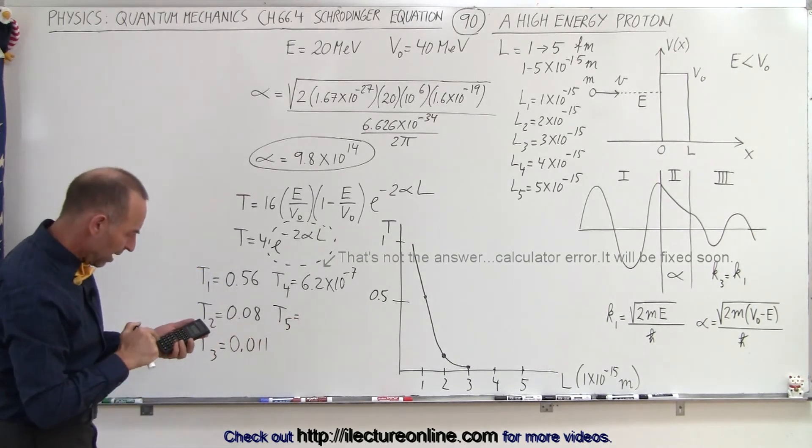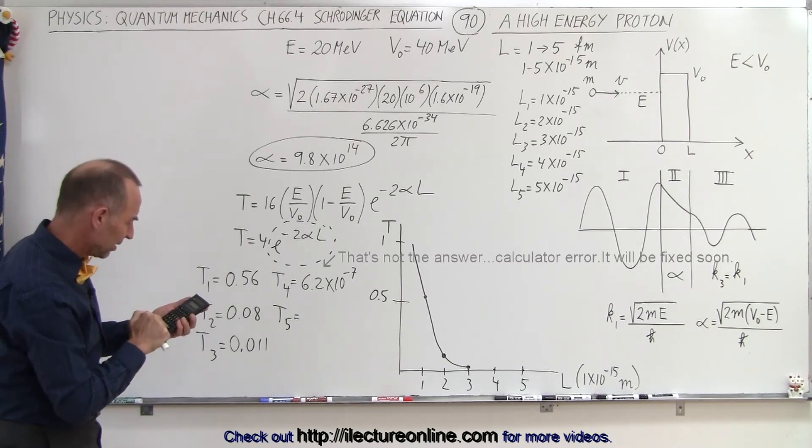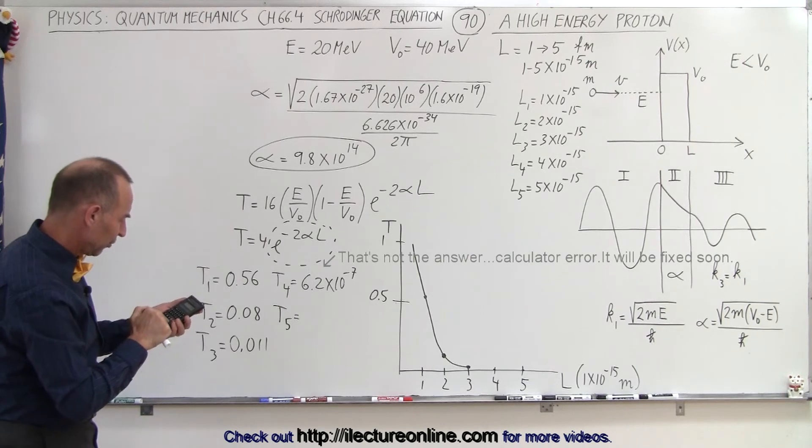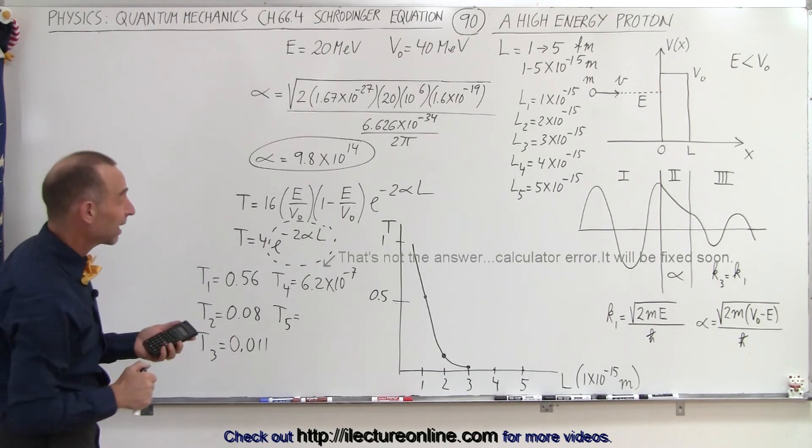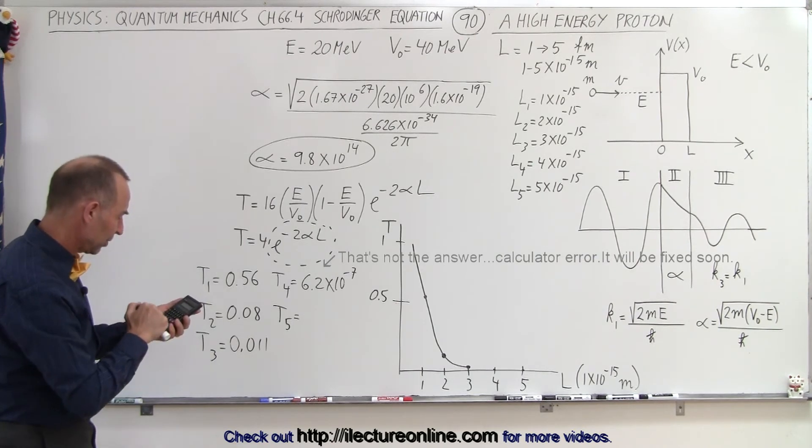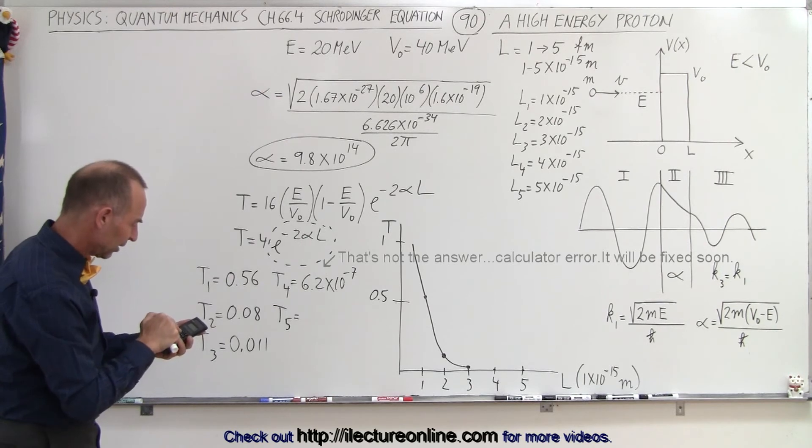So let's see here. We have 9.8 e to the 14th times 5 e to the 15th minus, times 2. Put in a negative in front of that, that exponent. Ah, let me try that again. I think I messed up. All right. 9.8 e to the 14th times 5 e to the 15th minus, times 2, and put in a negative in front, take the exponent.